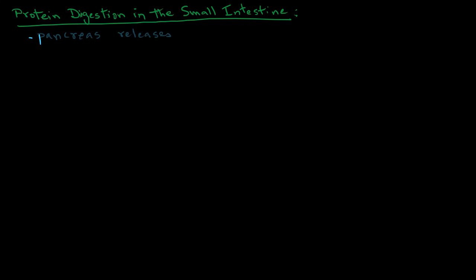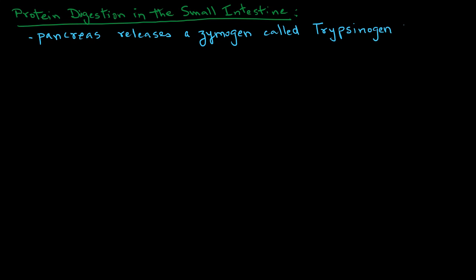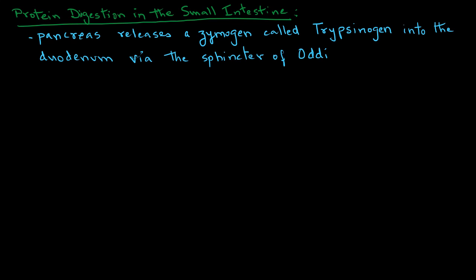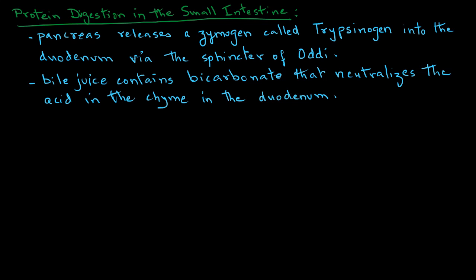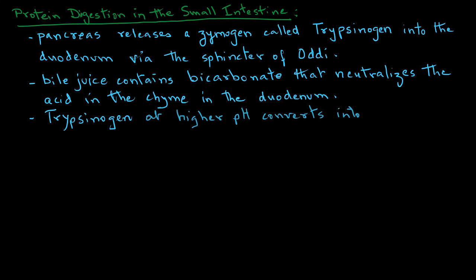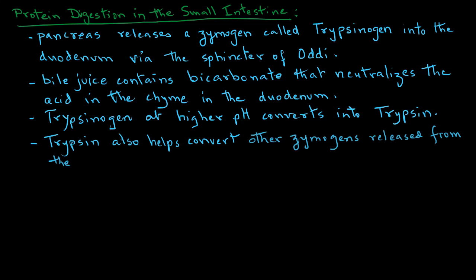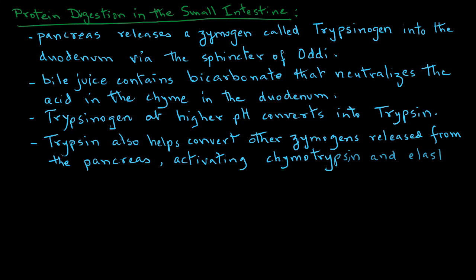The pancreas releases a zymogen called trypsinogen into the duodenum via the sphincter of Oddi. Recall that bile juice contains bicarbonates that neutralize the acid in the chyme in the duodenum, and trypsinogen at higher pH converts into trypsin.